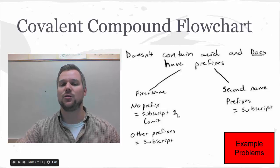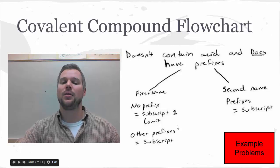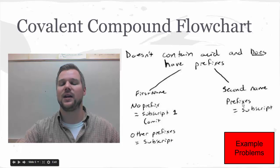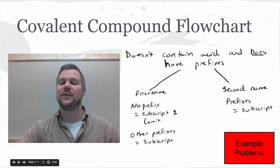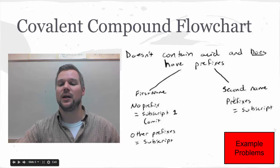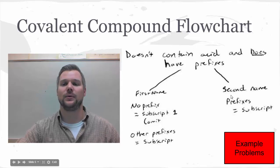All other prefixes will require a subscript on the first atom. The second atom is always going to have a prefix. If that prefix happens to be the number one for mono, you're again going to omit that from the actual formula.